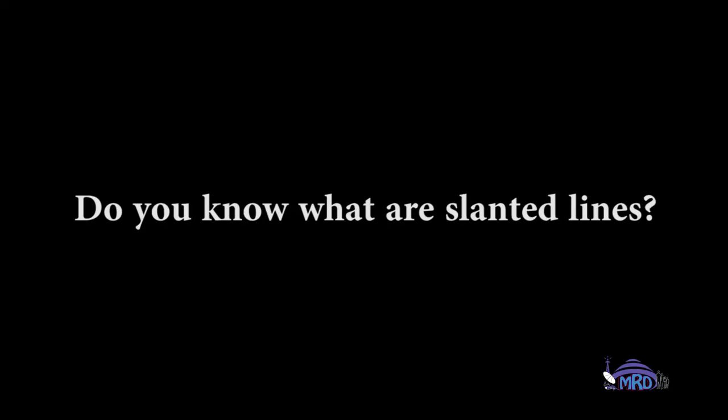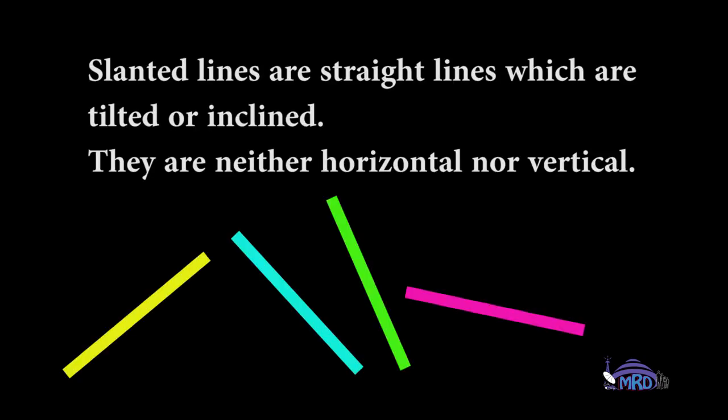Do you know what slanted lines are? Slanted lines are straight lines which are tilted or inclined. They are neither horizontal nor vertical.